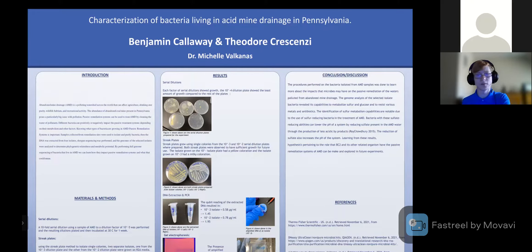Samples collected from the remediation sites were used to isolate and purify bacteria. Then DNA was extracted from four isolates. Shotgun sequencing was performed and the genomes of the selected isolates were analyzed to determine their phylogenetic readiness and metabolic potential. By performing full genome sequencing of bacteria, we can learn how they impact passive remediation systems.